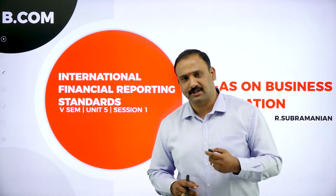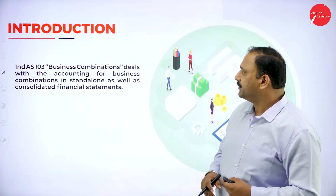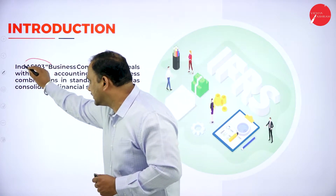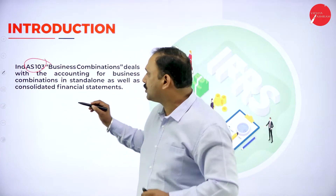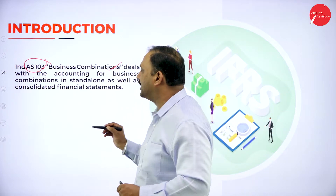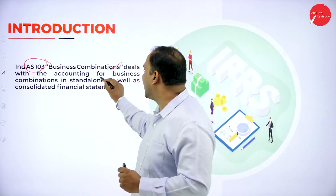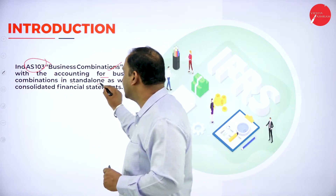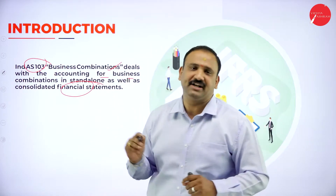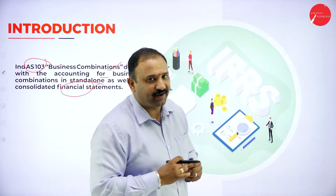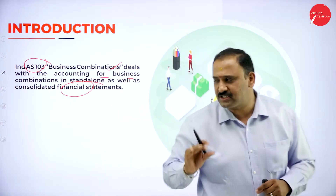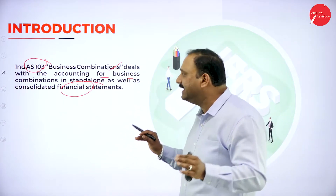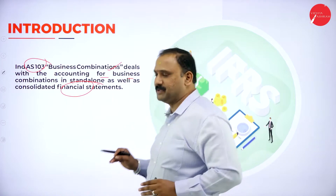What is this business combination all about? The Indian Accounting Standard 103 is the standard number which talks about business combinations and deals with accounting for business combinations in standalone as well as consolidated financial statements. It tries to tell us that business combinations will be dealing with accounting for business combinations.